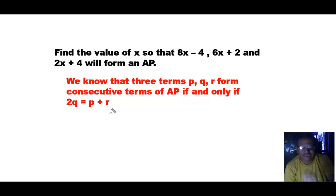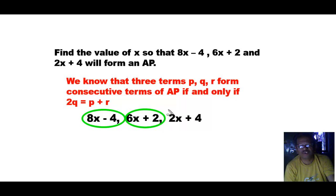So we will apply this condition here. The three terms are 8x minus 4, 6x plus 2, and 2x plus 4. So this will be P, this will be Q, and this will be R.